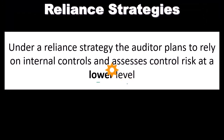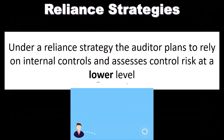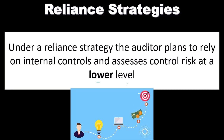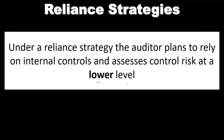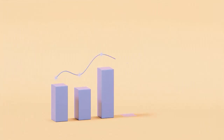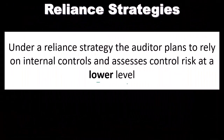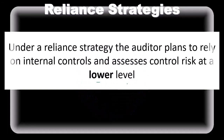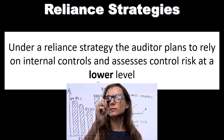What does low control risk mean? It means the controls are strong — the risk that controls like separation of duties won't catch an error is low. So we set control risk low, and therefore we can depend more on the controls and do less substantive testing. Because we're depending on the controls, we set the detection risk higher. Detection risk is the risk that our substantive tests won't catch a material misstatement — we can make that higher because we're relying on the controls, and still be within the range planned for in our overall audit risk strategy.